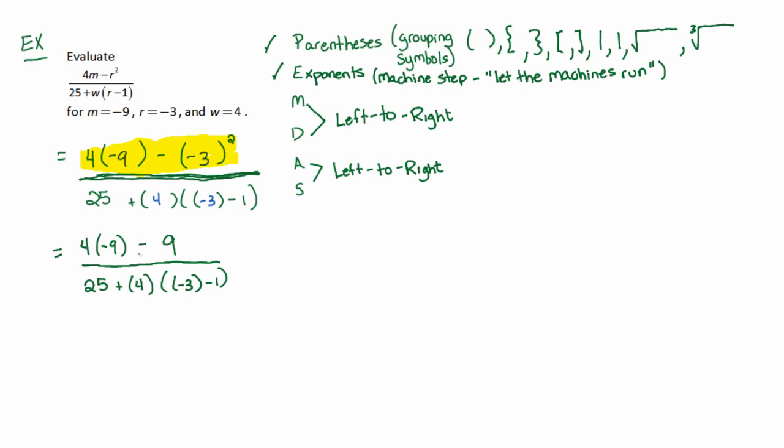Now I'm done with all the exponents in the numerator. Now we go to multiplication and division. Reading from left to right, I take care of any multiplication or division. I see 4 times negative 9 immediately. That turns into negative 36. And finally, I'll do my addition and subtraction from left to right. Negative 36 minus another 9, I'm at negative 45. Now I'm done with that group.